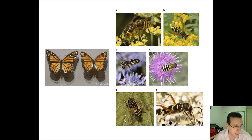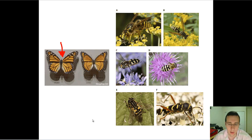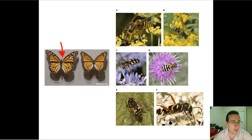A classic example of Batesian mimicry is the viceroy and the monarch butterfly. The monarch butterfly is very toxic — if consumed, it causes birds to regurgitate because it tastes very bad and is not palatable at all; the word we use is 'distasteful.' The color pattern of the monarch tells the bird to avoid it, and birds will either learn this or be born with innate behavior to avoid them altogether.